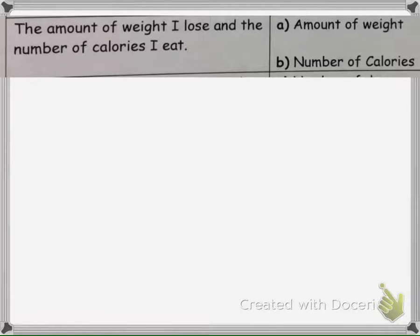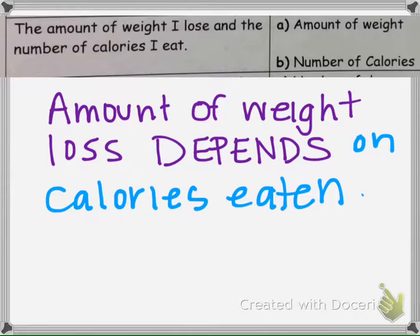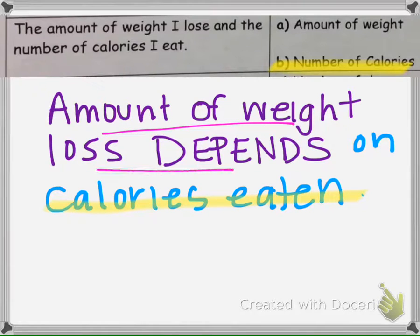Here we have the amount of weight I lose and the number of calories I eat. We're identifying the independent variable, so we need to ask: does the amount of weight lost depend on how many calories you eat? The amount of weight loss depends on how many calories you eat — the more calories you eat, the less weight you will lose. So the number of calories eaten is the independent variable, since the amount of weight lost is the dependent variable.